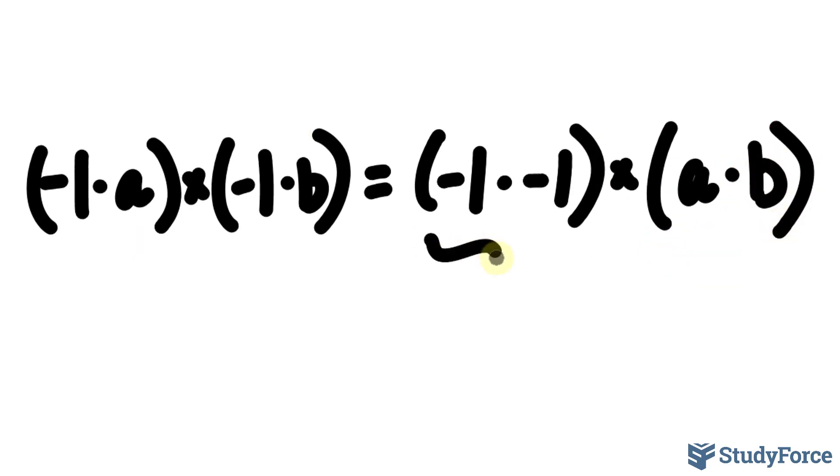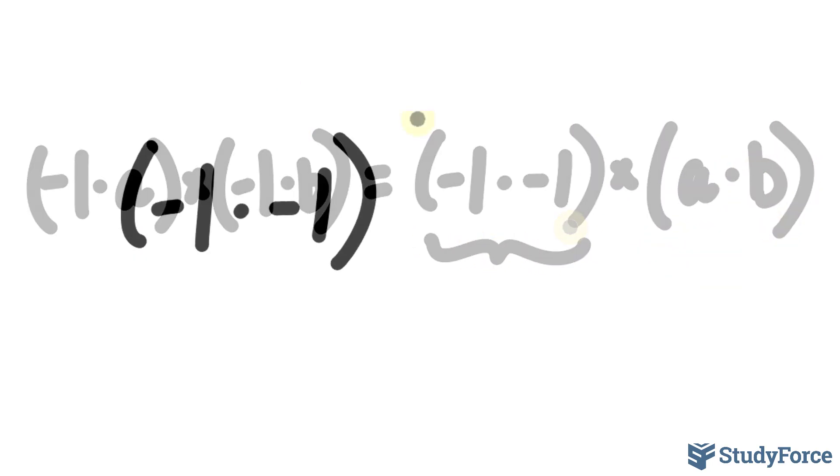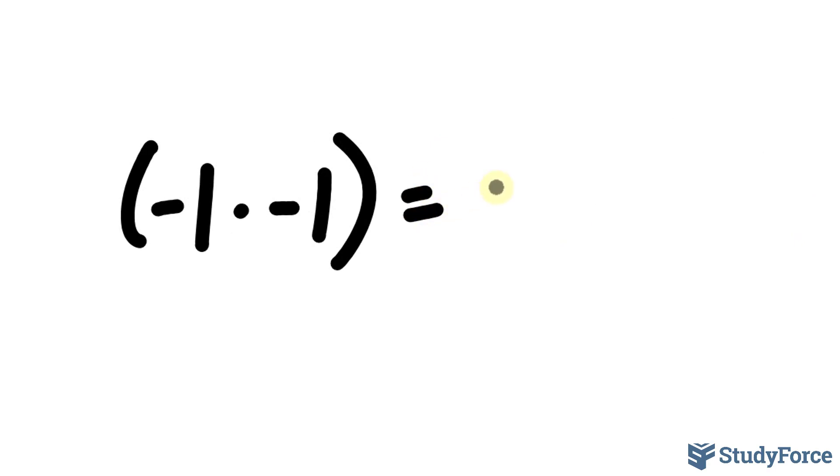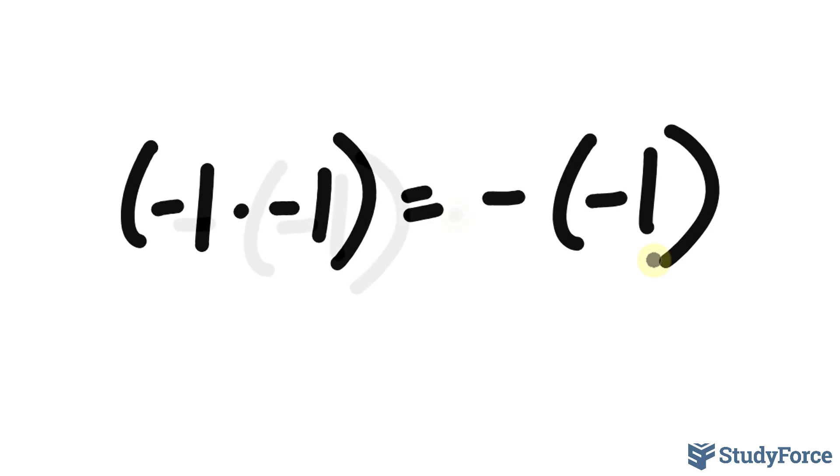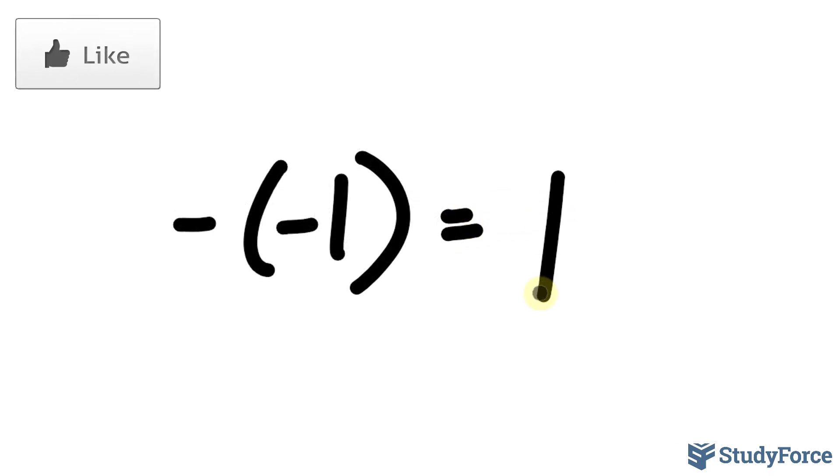Now let's focus on the term negative one times negative one. This expression can be simplified as negative times negative one. By the definition of negation, negating a positive value makes it negative, and on the contrary, negating a negative value should make it positive. Therefore, negative negative one actually equals one.